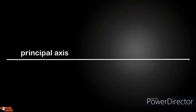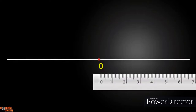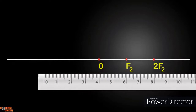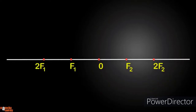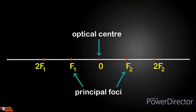Draw a line representing the principal axis and mark the optical center O roughly in the center of the line. Using a ruler, mark two points to the right of O: f2 is at two centimeters from O and 2f2 is double the distance at four centimeters from O. Similarly, on the left side mark f1 and 2f1 using the same distances. O is the optical center of the lens and f1 and f2 are the two principal foci.